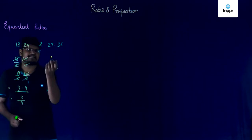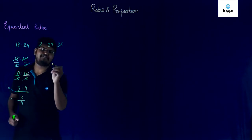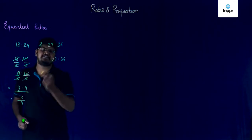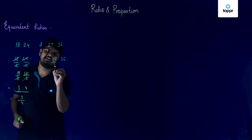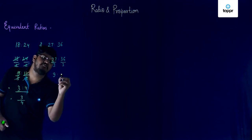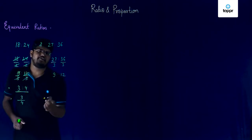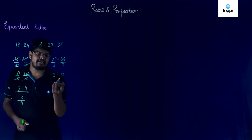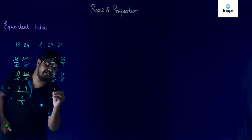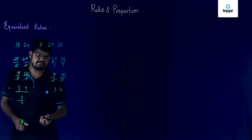Now, let's simplify 27 is to 36. Both these numbers come in the table of 3. So, let's divide them by 3 and this will give us 9 is to 12. You can see that 9 and 12 are again multiples of 3 only. So, we'll again divide both these numbers by 3 and we'll get 3 is to 4 as the final result.